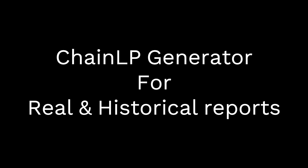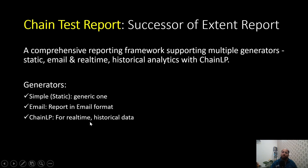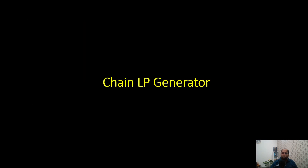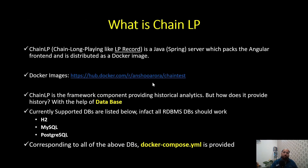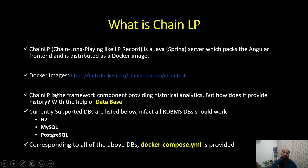Now we are going to discuss another type of generator — the ChainLP generator — to generate real-time and historical data. ChainLP is a Java-based Spring Boot server which packs an Angular front end and is distributed in the form of a Docker image. The Docker image is available at a specific location, and in order to use ChainLP generator, we need to create a container of it which will serve as a server where we can view different reports related to ChainLP.